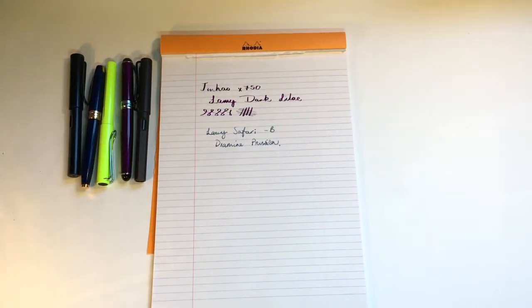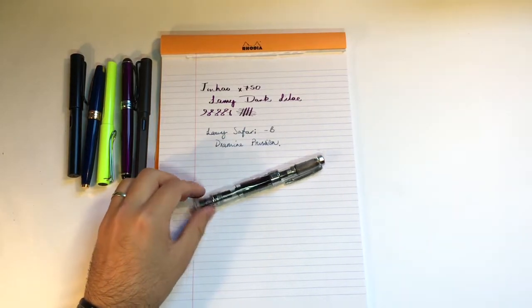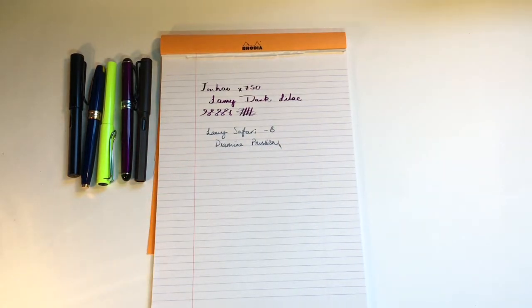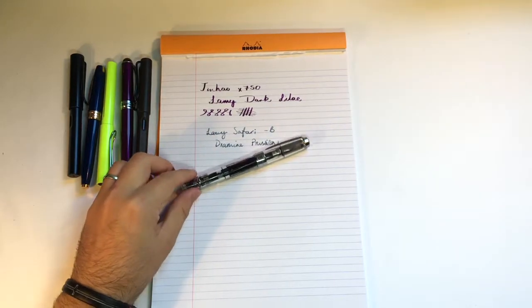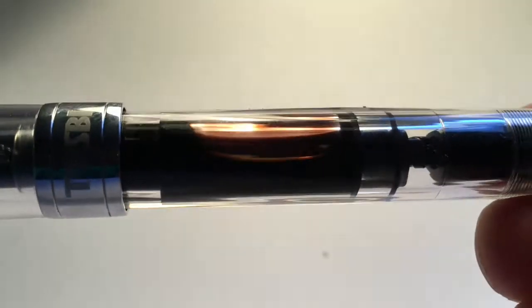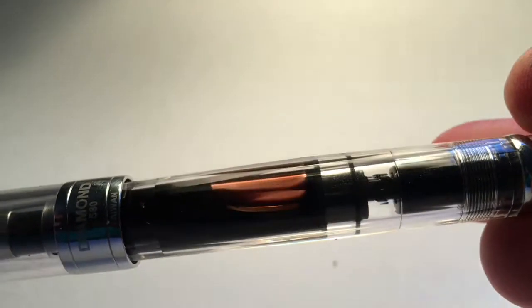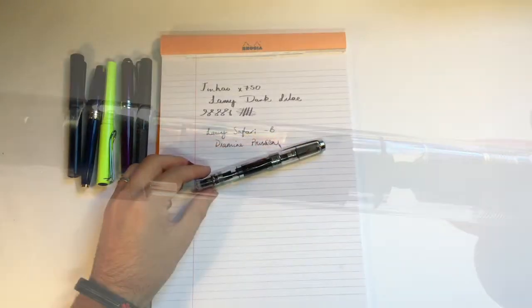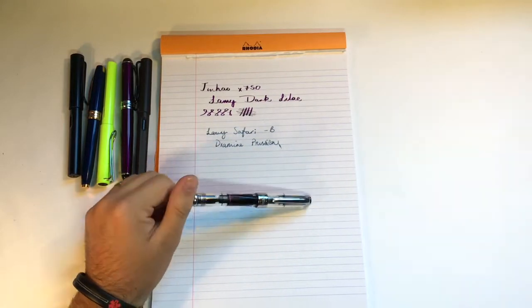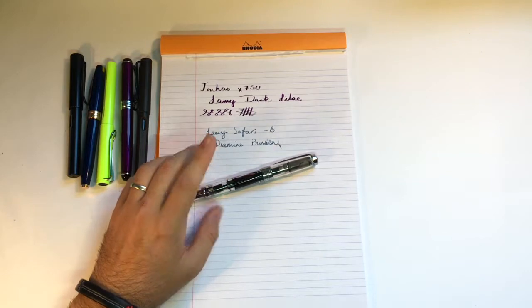Next is the last inked pen I have at the moment, which is the Twsbi 580, the diamond one. This has got a medium nib on it. I won't write with this one because it is an ink that I am reviewing at the moment. You can see it's sloshing around so you can see what sort of color we're talking about. It's a really interesting ink and you'll see a review of that quite soon so keep an eye out.